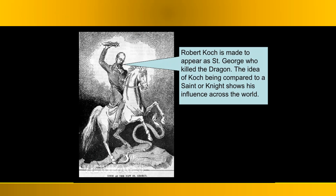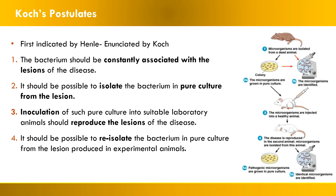Koch discovered Mycobacterium tuberculosis in 1882 and Vibrio cholerae in 1883. His identification of M. tuberculosis as the cause of TB was so impactful that he was compared to a saint who killed the dragon — showing his immense influence worldwide, since tuberculosis was a very major disease. He also gave us Koch's postulates, originally indicated by Henle but later refined and enunciated by Koch.